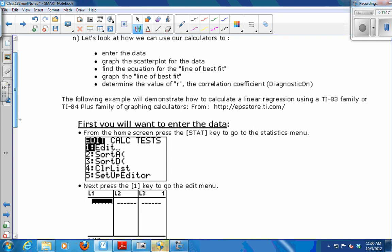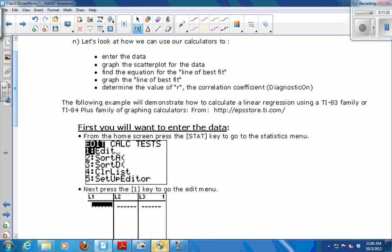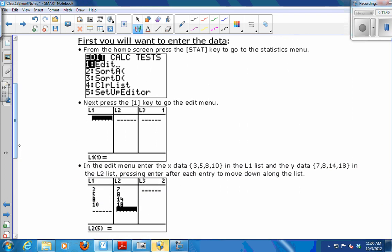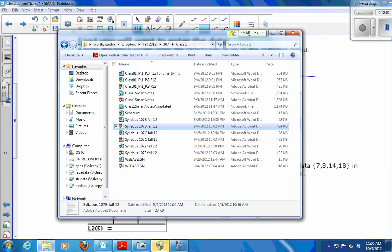So let's take a look at how to get our calculators to do this for us. There's five steps or something. We have to enter the data. We have to graph the scatter plot. We have to find the equation for the line of best fit and graph the line of best fit. And finally, we want to determine the r value. So here's the data set I'm going to work with. It's a very small one. That's my XY data. So I have screenshots in here to show you exactly what I'm doing so that you can go back and look at it later.